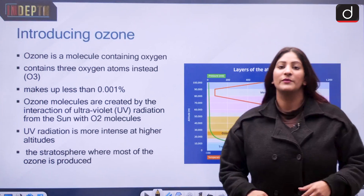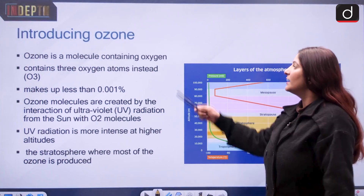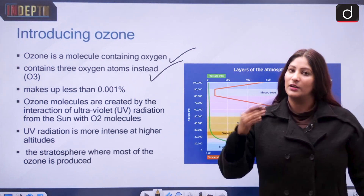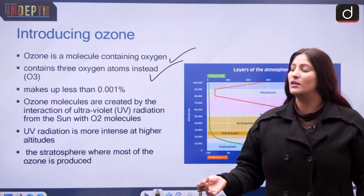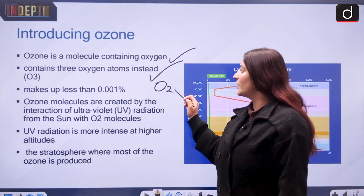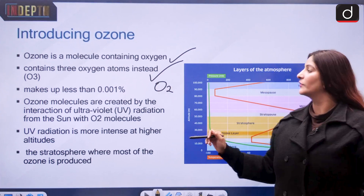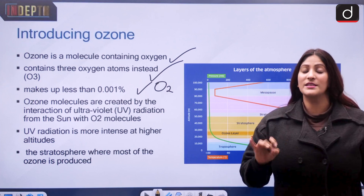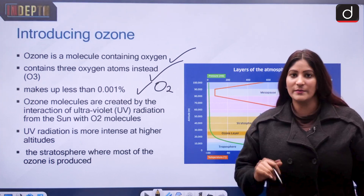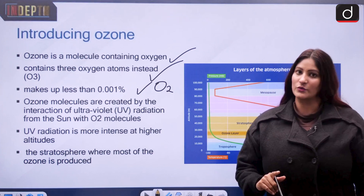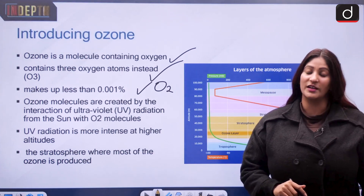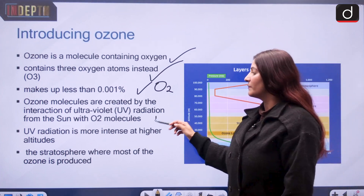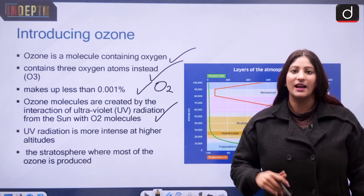Ozone is basically a molecule — it contains three atoms of oxygen instead of two. Oxygen is O2, but ozone is O3. It makes up less than 0.001 percent of the atmosphere, while oxygen makes up 21 percent. Despite this tiny fraction, ozone is a very important element in our atmosphere because it protects us from harmful ultraviolet radiation from the Sun.